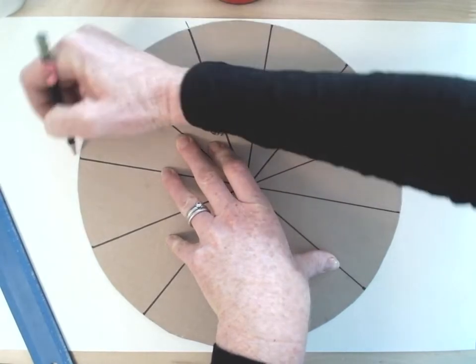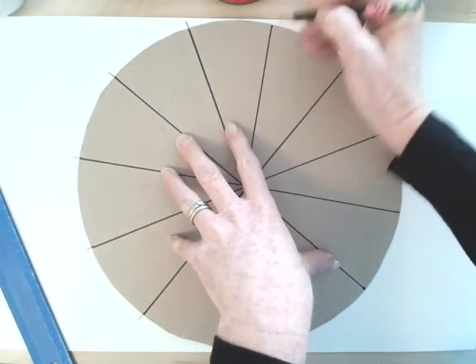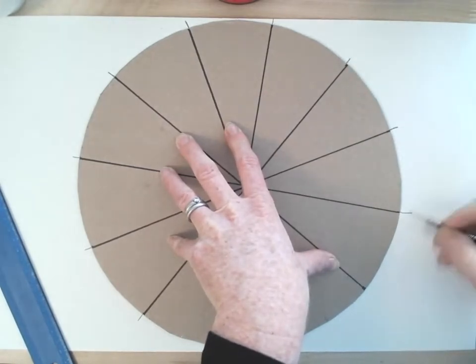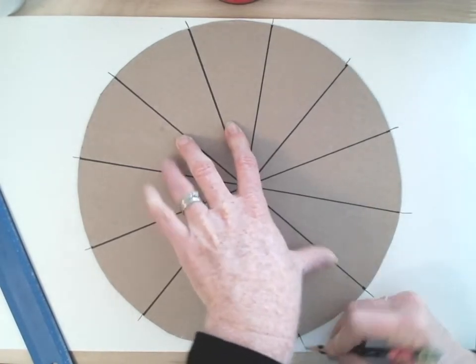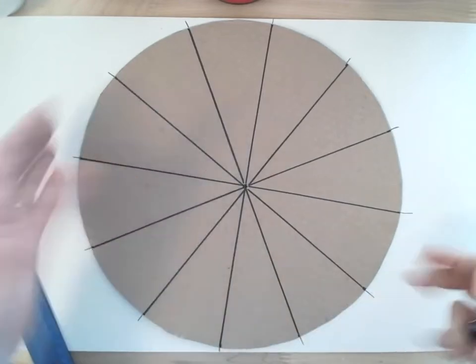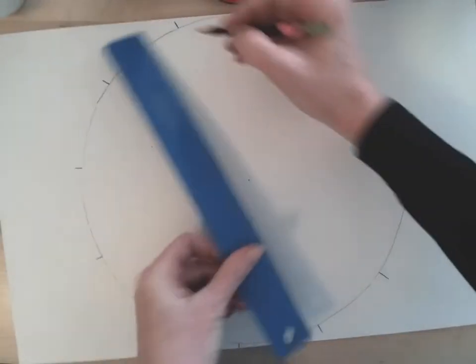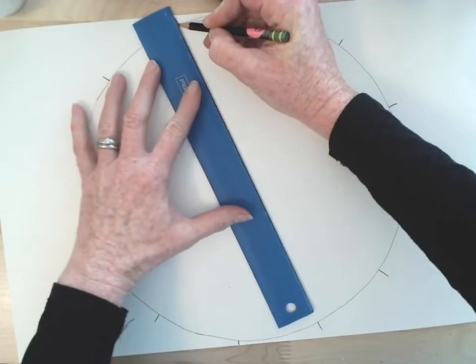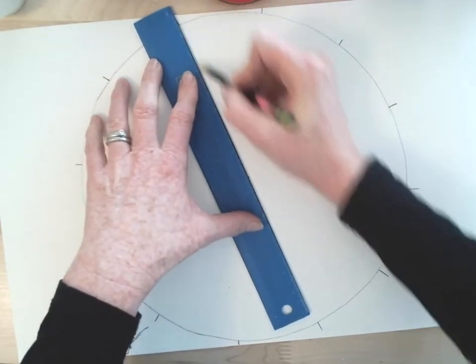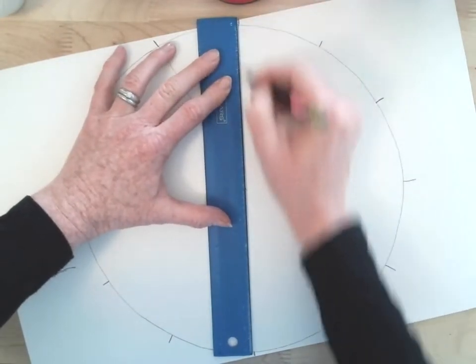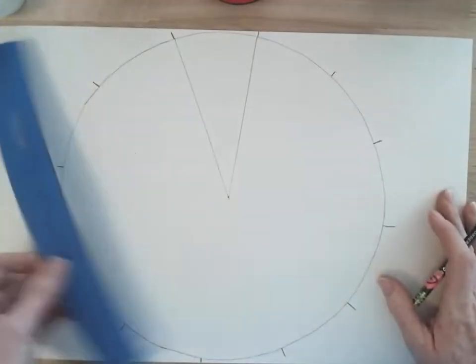You need to make a mark at every single place where the line intersects with that circle. When you remove this stencil, you'll have the marks and that dot in the center. Take your ruler now and connect every single mark with the dot, so you end up with that same sort of pizza pie. You can see how they all connect. Go around the circle and do every single one of them.